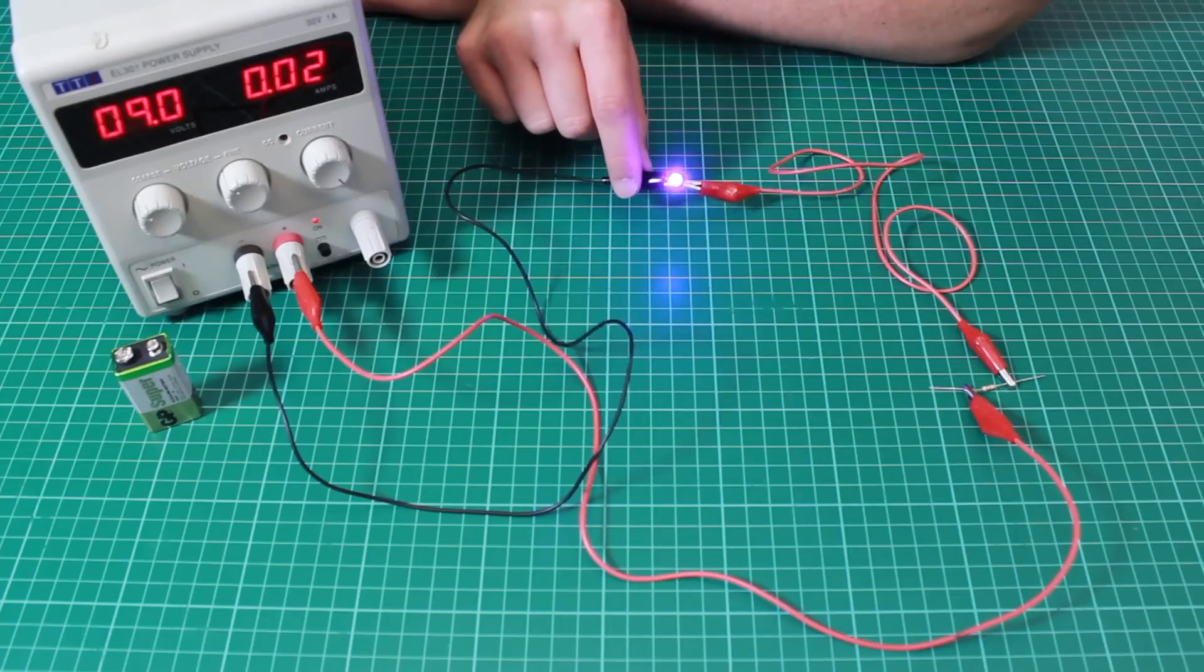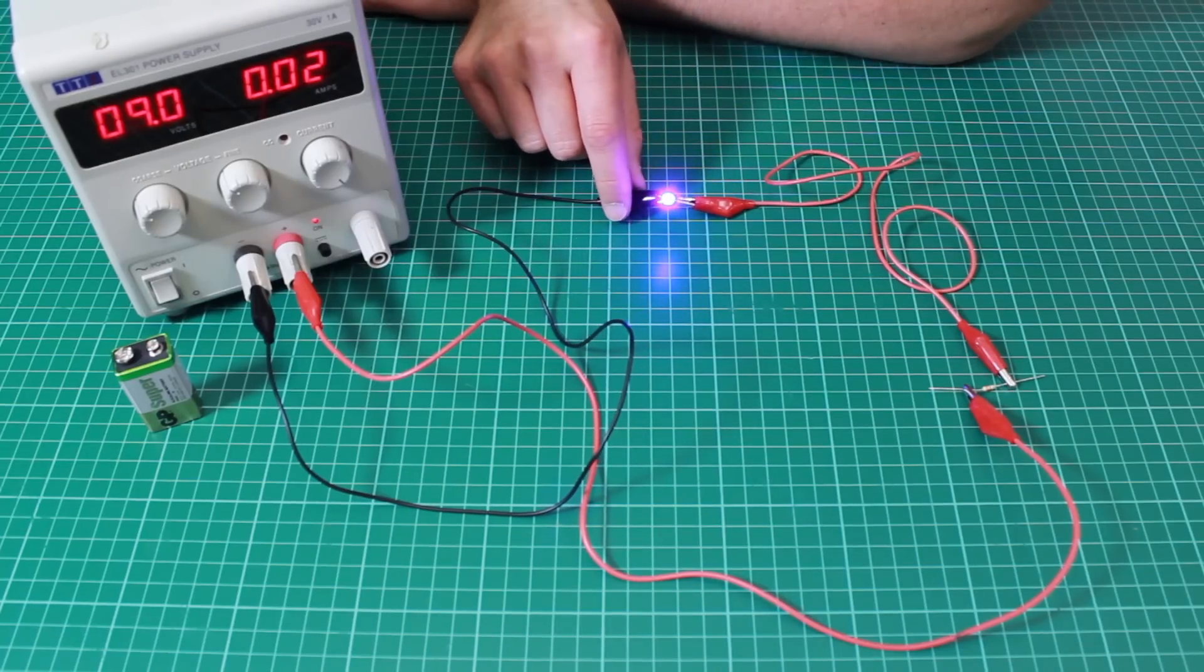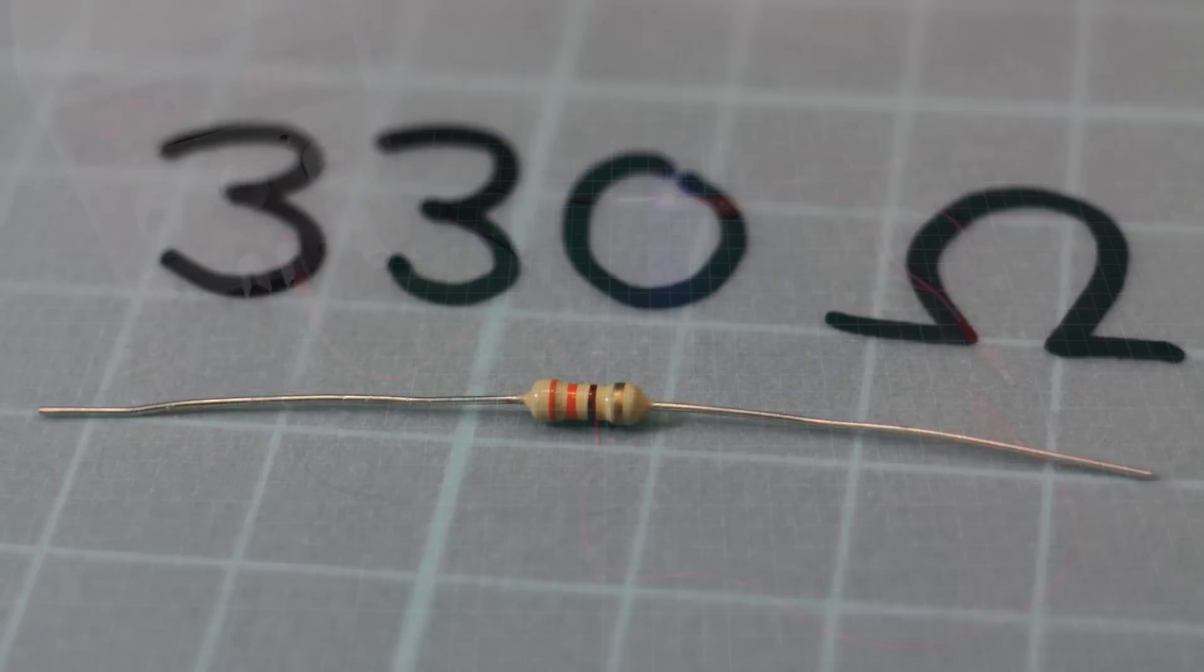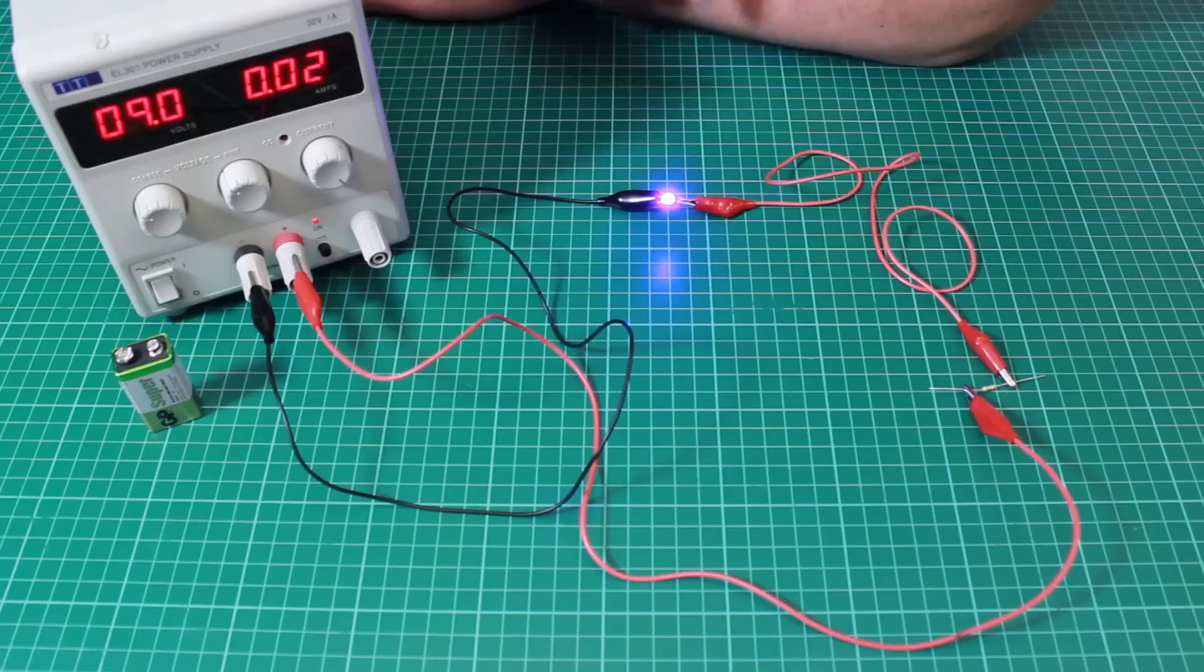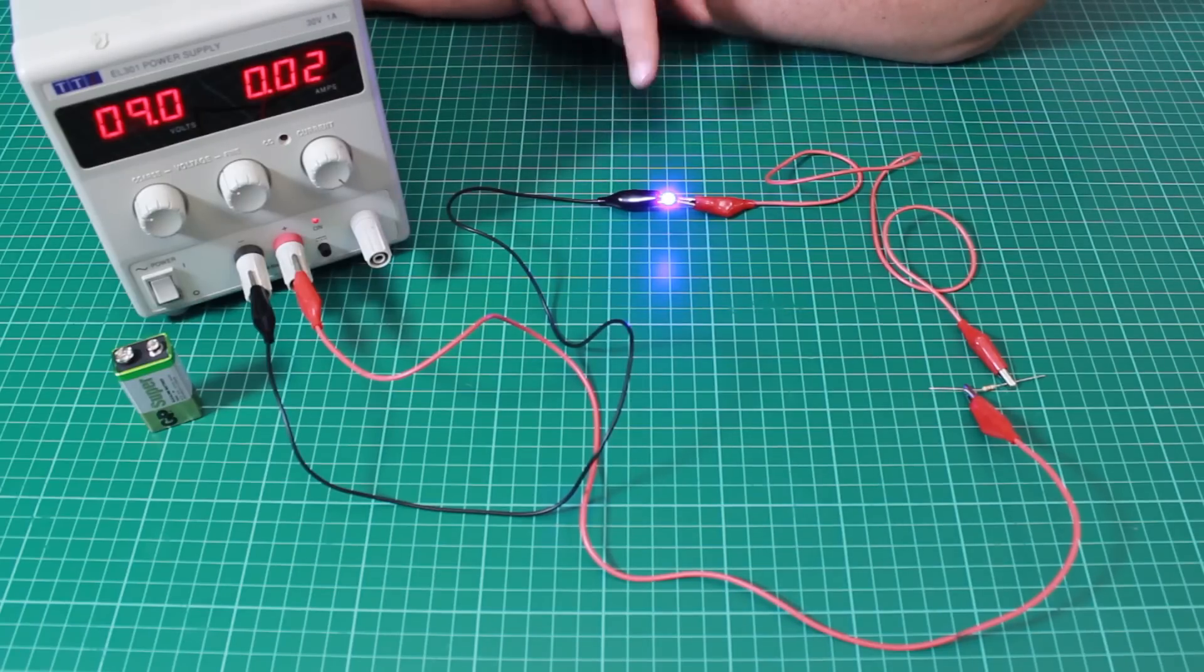As we can see the LED is lit perfectly. This is because we're using the correct value resistor which is causing a current of 0.02 amps or 20 milliamps to flow through the LED.